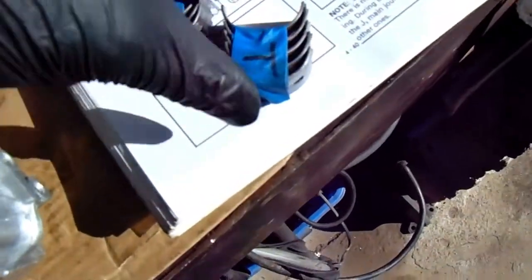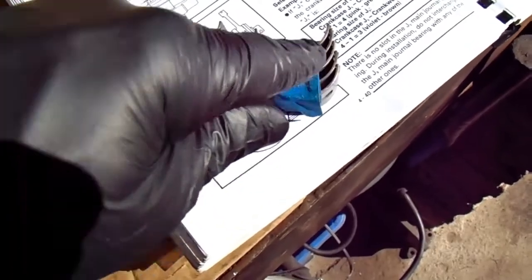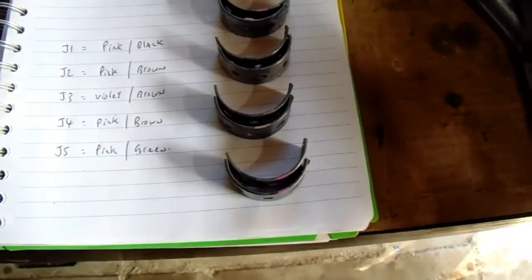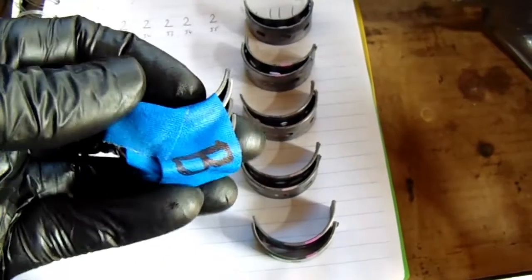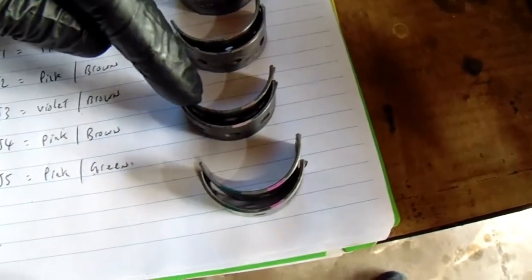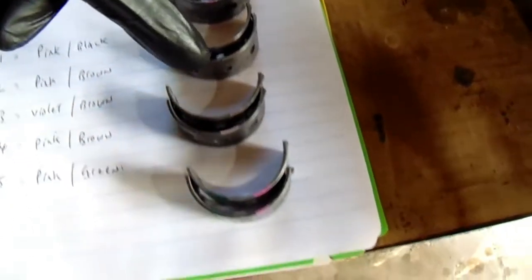And these bearings, these are out of a case that I bought, in fact it was these actually. So we will just double check what those are. Right, as luck would have it, I actually found a set of pink and brown ones in them others that I had. So that was good. So now, we've got pink and black, pink and brown, violet and brown, pink and brown, and a pink and green. So, one, two, three, four, five.